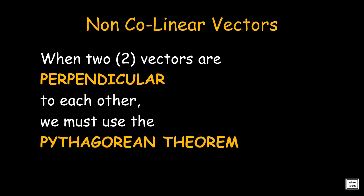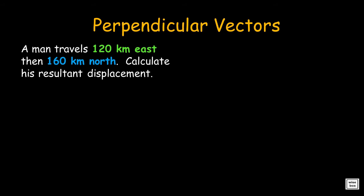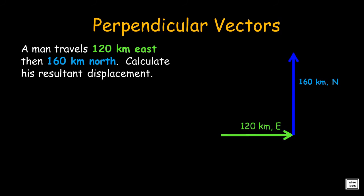Let us move to solving problems involving non-collinear vectors. When two vectors are perpendicular to each other, we must use the Pythagorean theorem. A man travels 120 km east, then 160 km north. Calculate his resultant displacement. This is the first vector, then the second vector. Here is the resultant — the line starting from the tail of the first vector to the head of the last. Notice that the two vectors are perpendicular, so we can use the Pythagorean theorem.